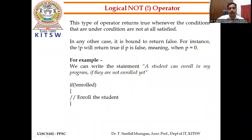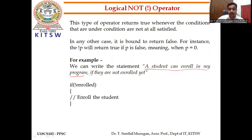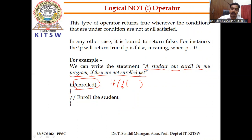For the NOT operation: a student can enroll in a program if they are not enrolled yet. The exclamatory (!) symbol is used for NOT operation. If already enrolled (true), no need to enroll again — the statement will not work. NOT reverses the truth value: if input is false, it becomes true.